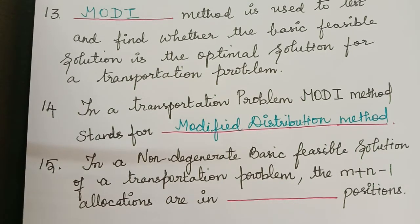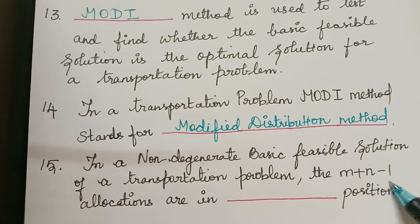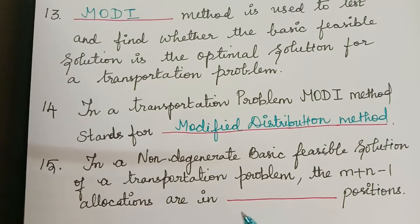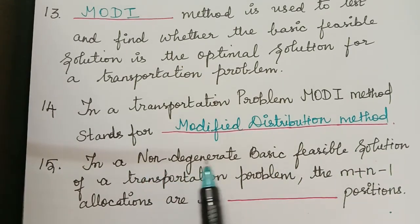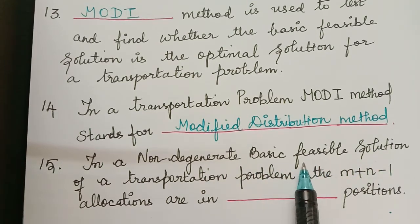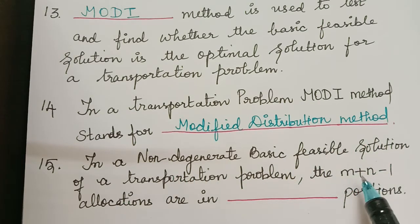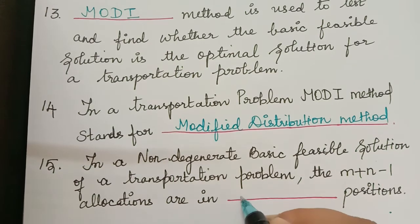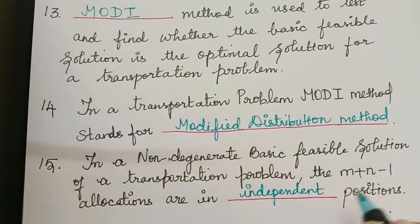The next question is: in a non-degenerate basic feasible solution of a transportation problem, the M plus N minus 1 allocations are in what positions? A basic feasible solution is said to be non-degenerate if the total number of allocations is exactly M plus N minus 1. These allocations will be in independent positions — they will not be dependent on one another. So the answer is independent positions.